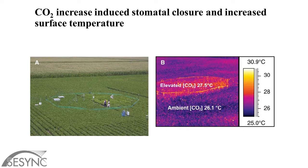But if you think outside of the plant, what happens when you decrease plant water loss? Water loss from plants plays a pretty important role physically on ecosystems and cooling. Water vapor loss in ecosystems cools ecosystems. So when you decrease water loss, you increase heating.